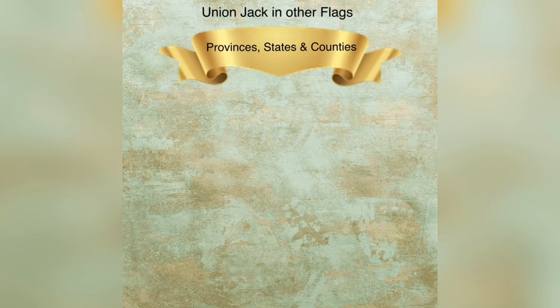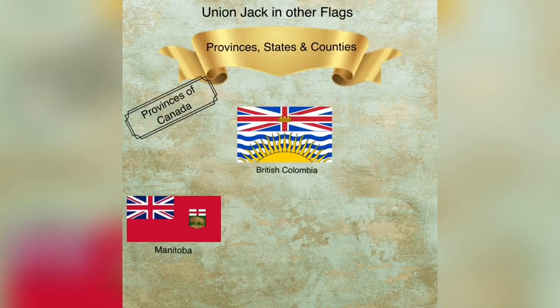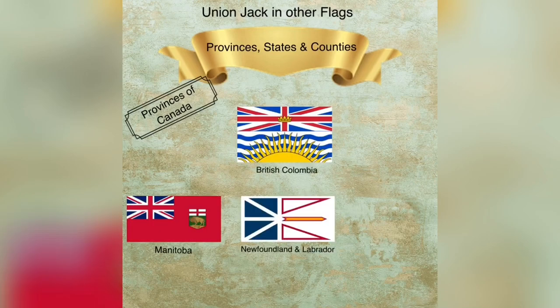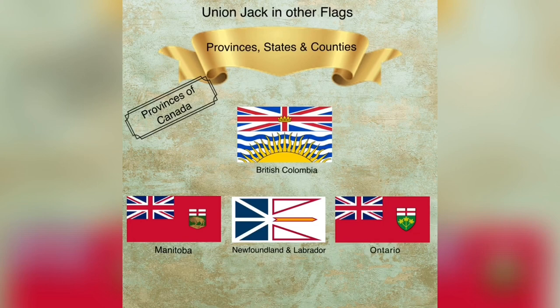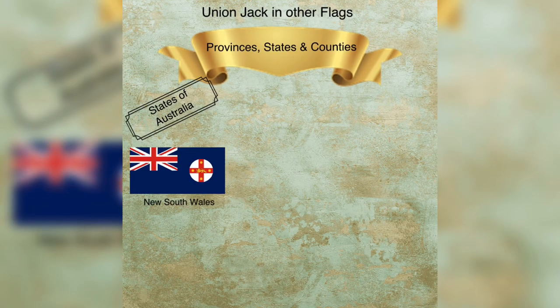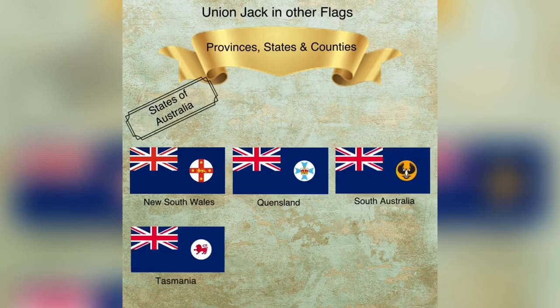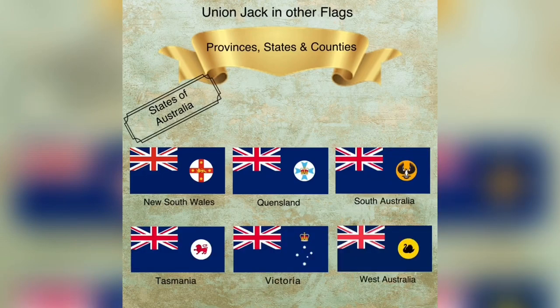There are also provinces, states, and counties of other countries whose flags bear the Union Jack. Flags of four Canadian provinces — British Columbia, Manitoba, Newfoundland and Labrador, and Ontario — bear the Union Jack. Flags of the six Australian states also bear the Union Jack, the six states being New South Wales, Queensland, South Australia, Tasmania, Victoria, and Western Australia.